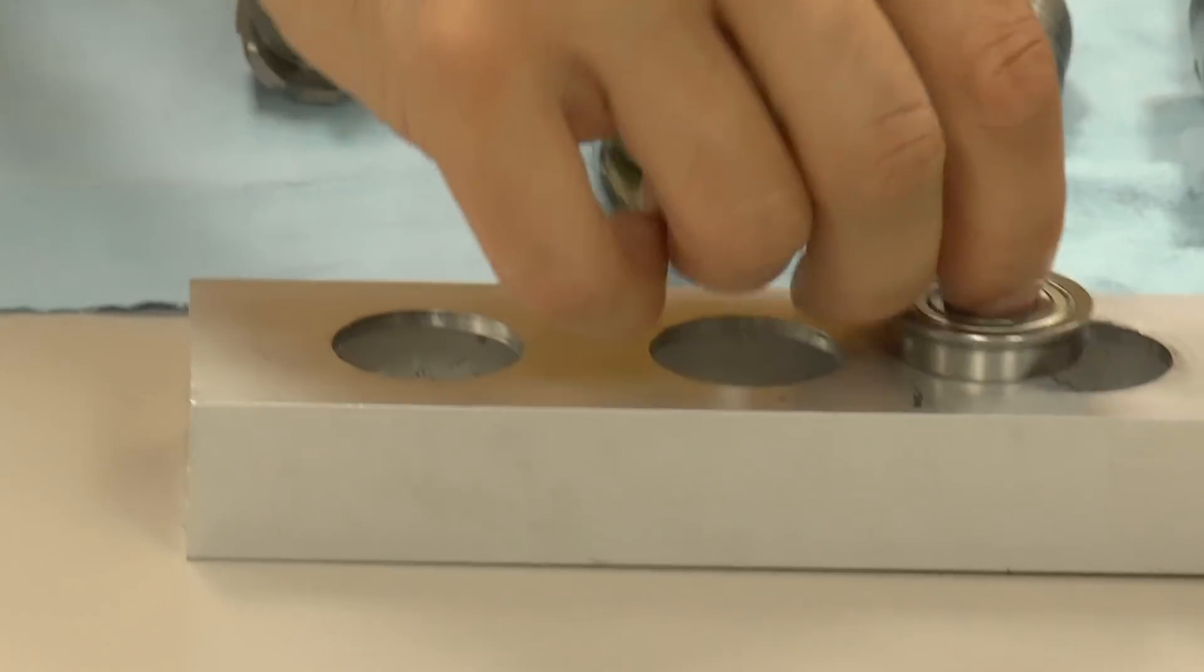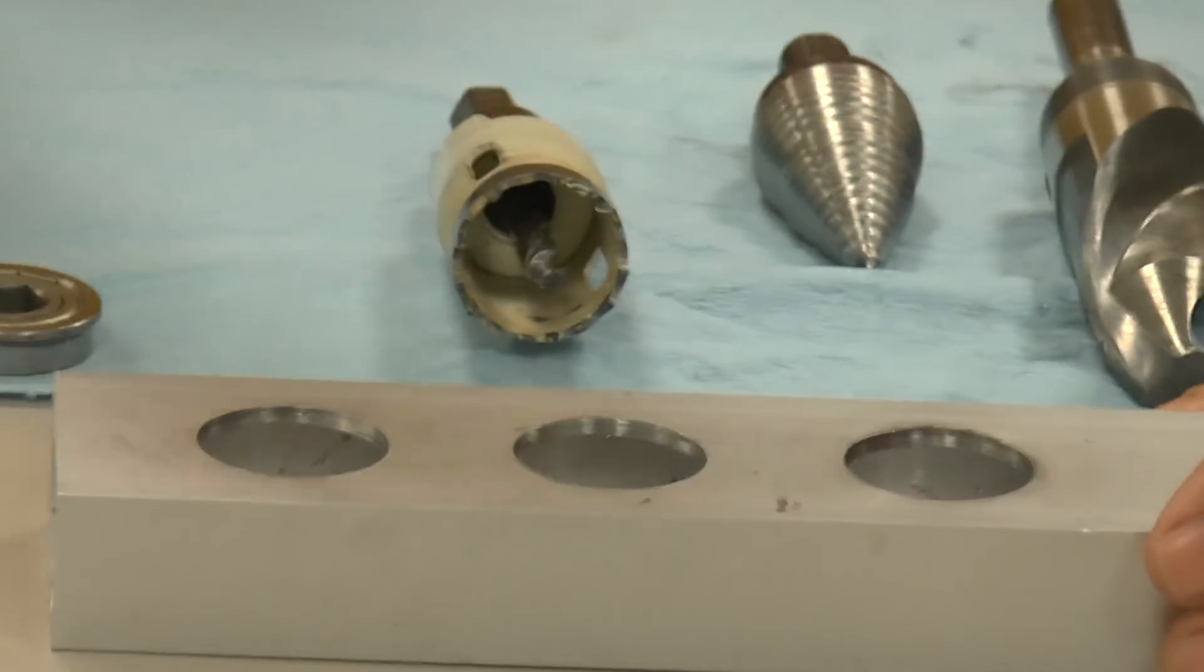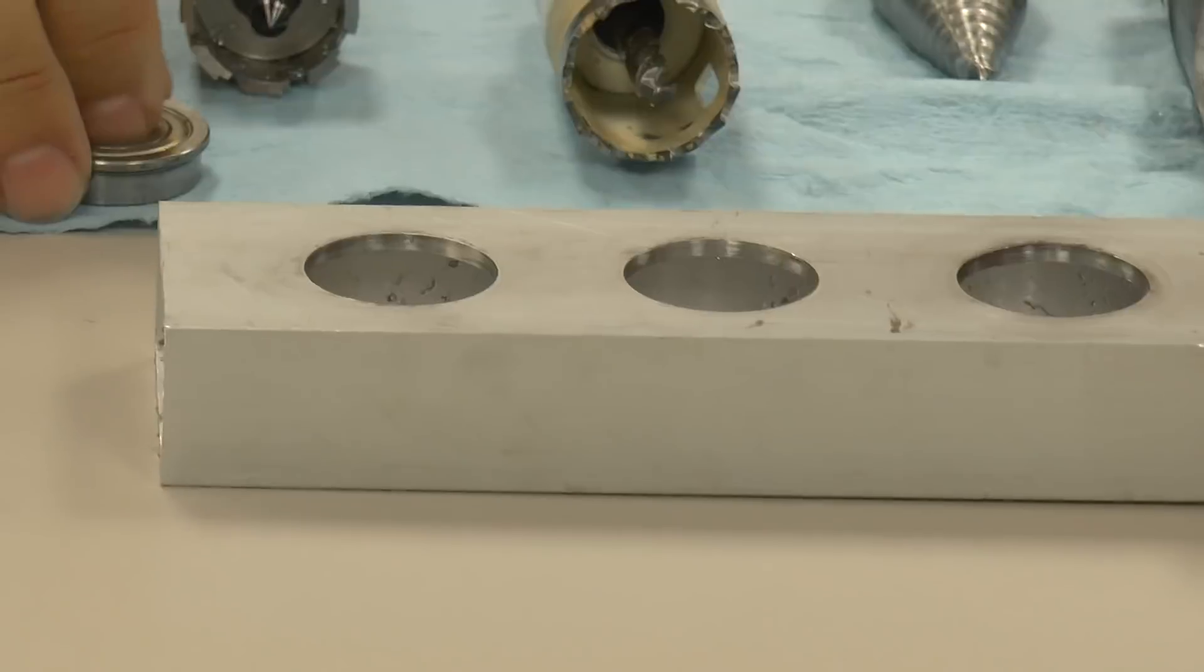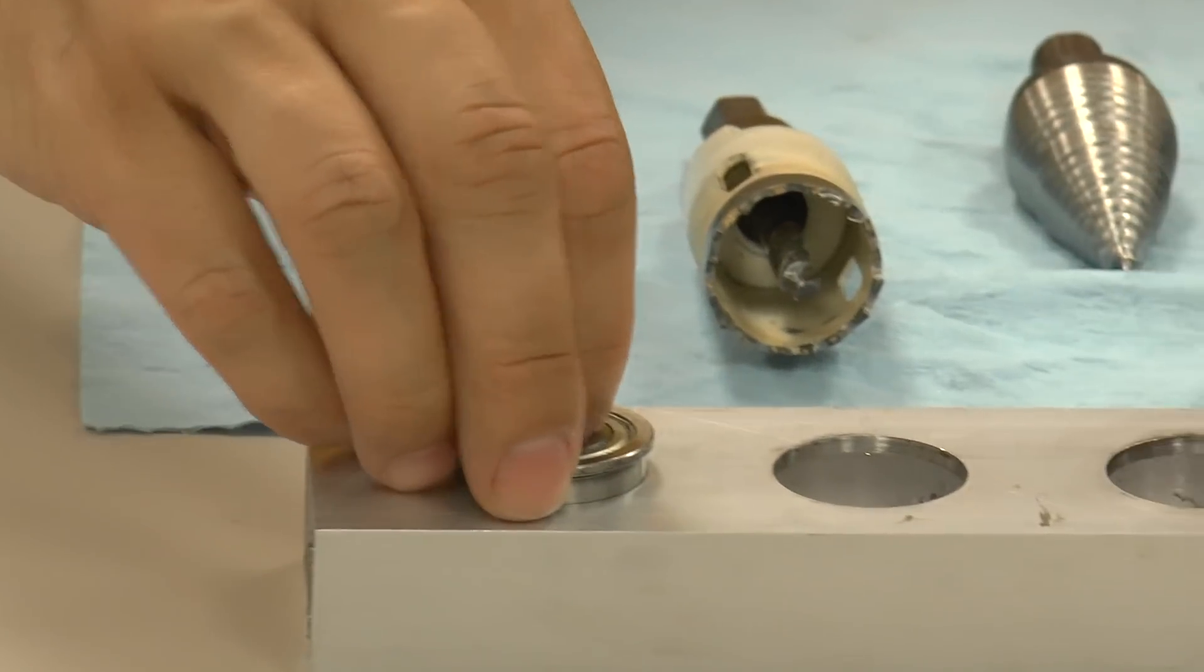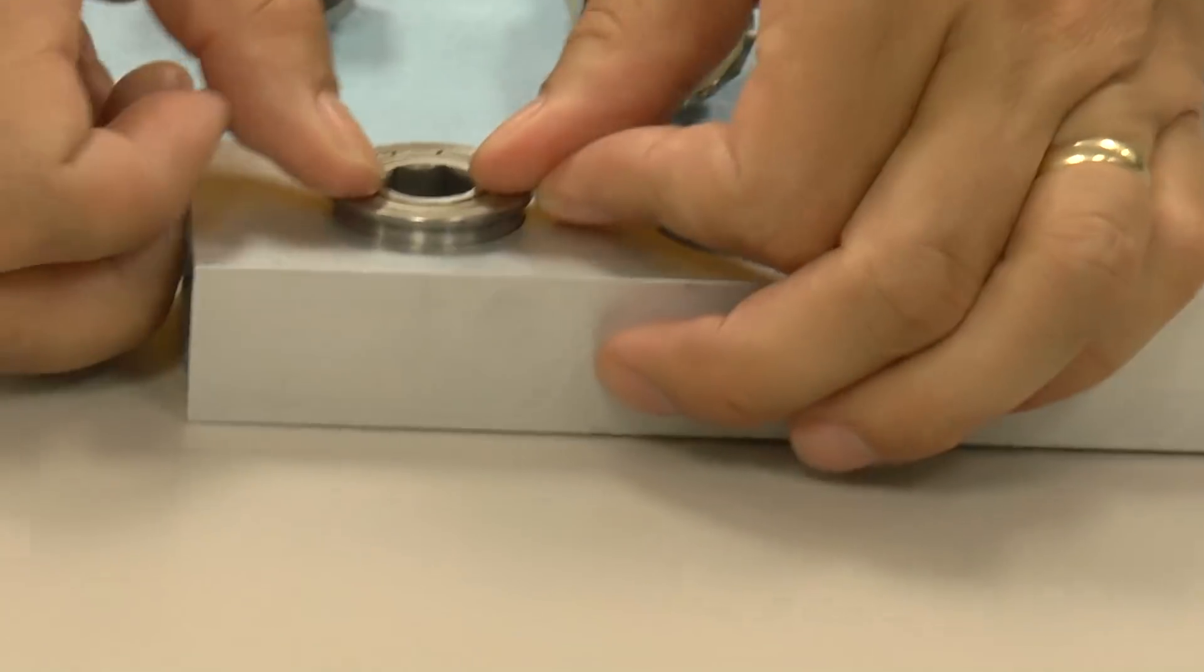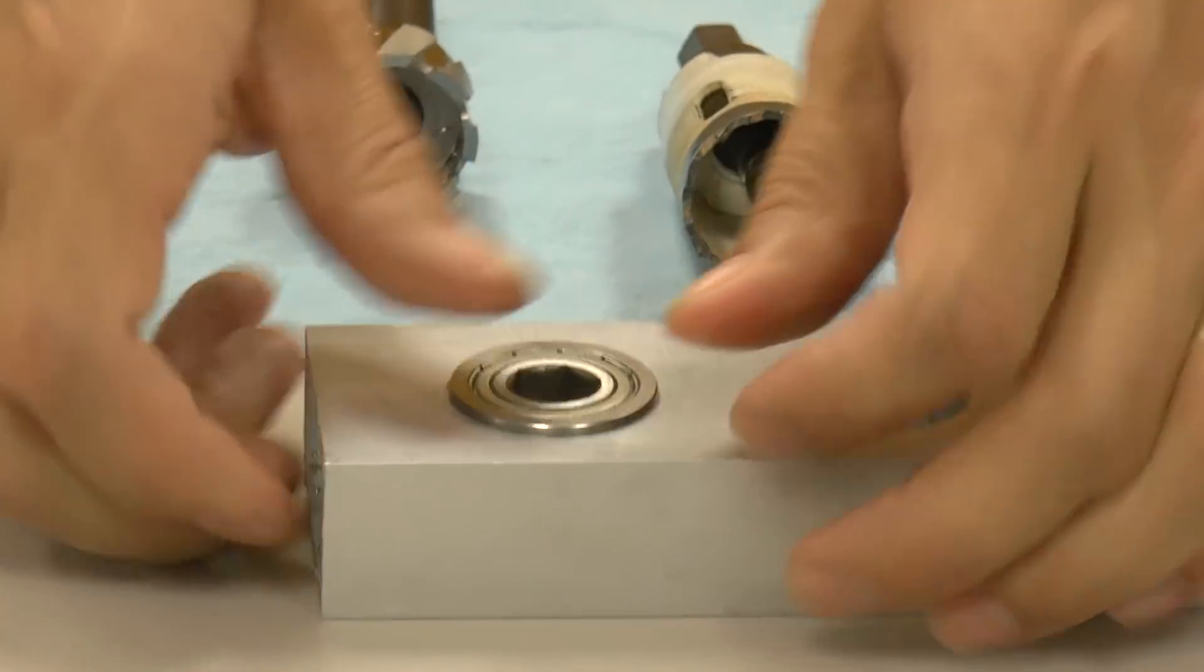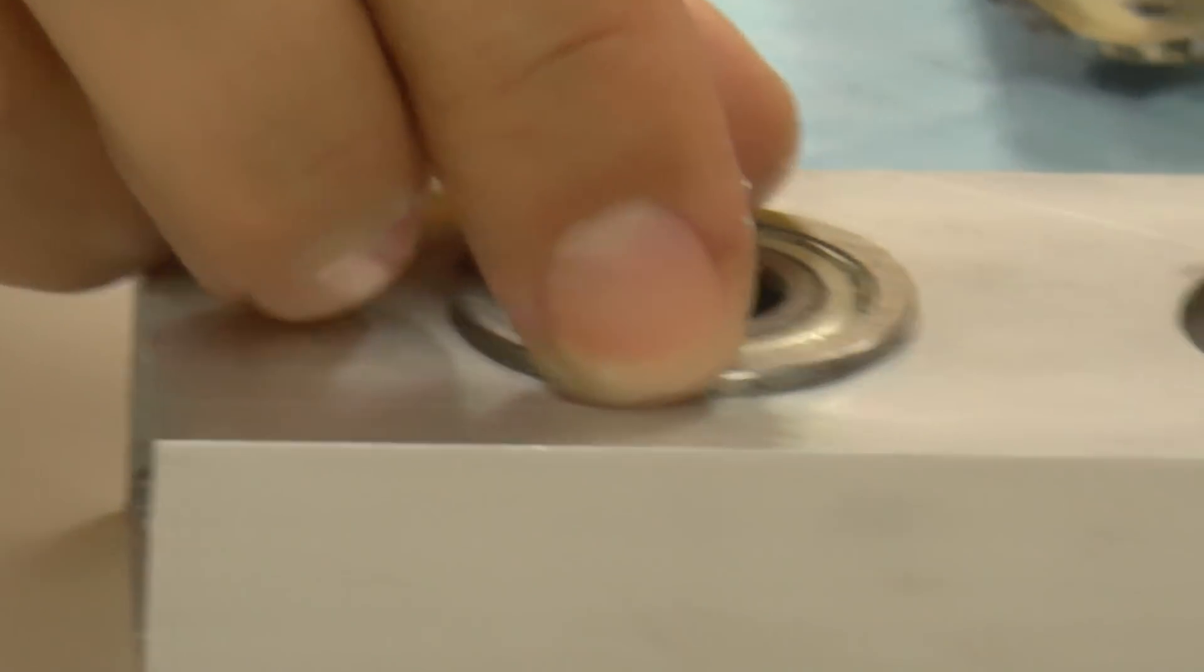These other two bores were made with this shell cutter. And these are fantastic. They're just right on size. They just go right in. So that's a nice, tight hole.